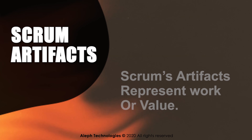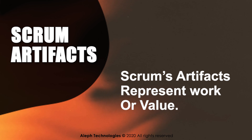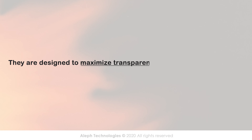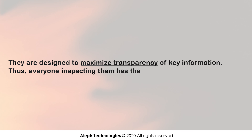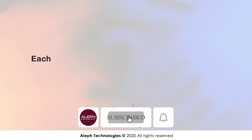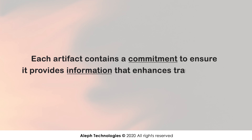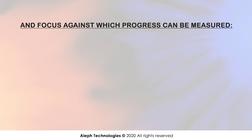Scrum artifacts represent work or value. They are designed to maximize transparency of key information, so that everyone inspecting them has the same basis for adaptation. Each artifact contains a commitment to ensure it provides information that enhances transparency and focus against which progress can be measured.